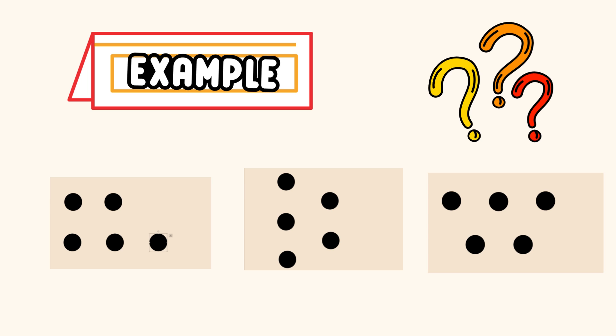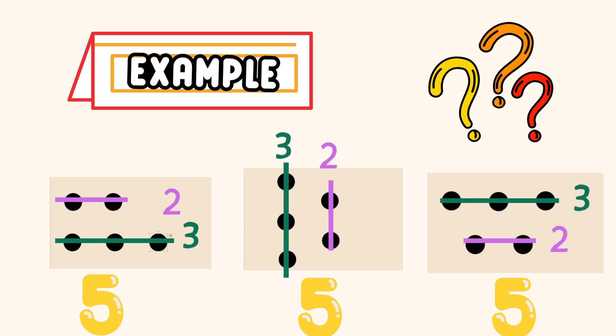Yes, all three dot images represent the total of five. They can all also be broken into two and three using straight lines.